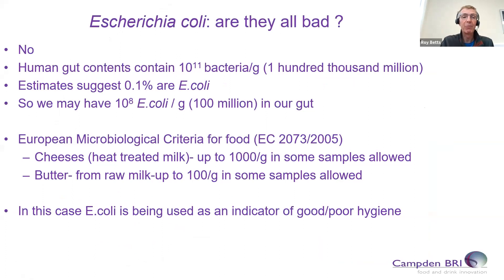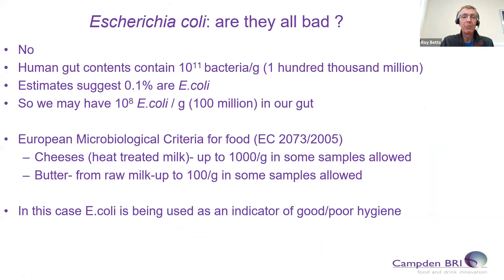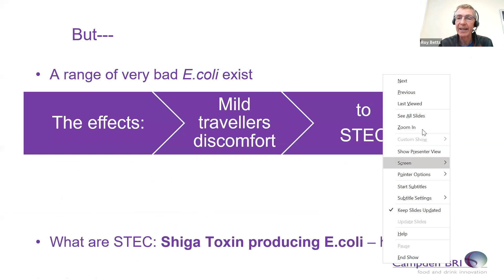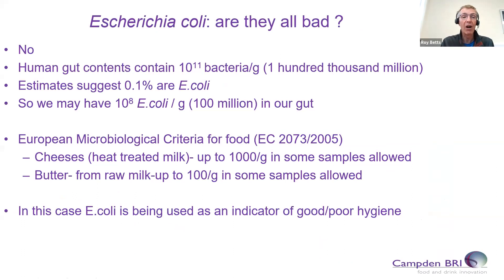First of all, what about E. coli? We often get caught up with what E. coli actually is and are all E. coli pathogenic. Of course, the answer is no, not all E. coli are pathogenic. If we look at some basic publications, the human gut flora contains somewhere in the region of around 10 to the 11 bacteria per gram — that's 100,000 million bacteria per gram of gut contents. Estimates suggest that somewhere around 0.1% of those are E. coli, so we may have somewhere around 10 to the 8, 100 million E. coli per gram in our guts.